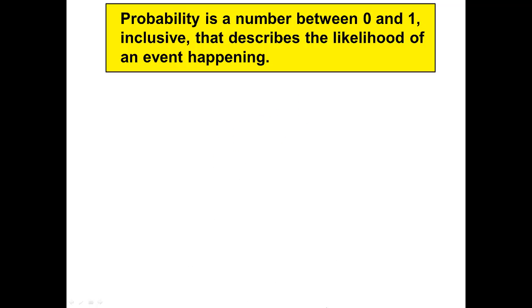Let's look at this slide. Probability is a number between 0 and 1, inclusive, meaning that it includes both the 0 and the 1 and all the numbers in between. And it describes the likelihood of an event happening.